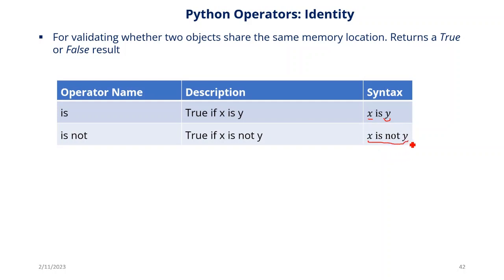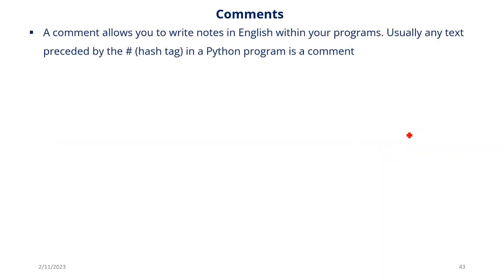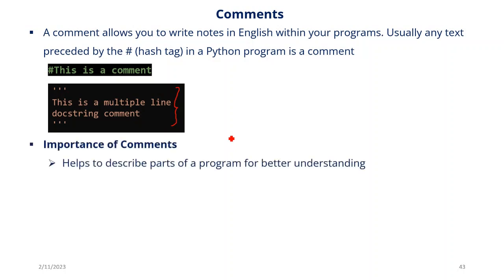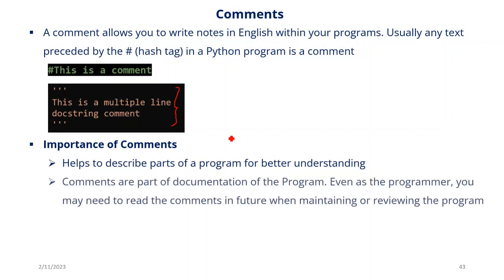Comments — before we go. We cannot overemphasize the importance of comments in programming. The basic comment in Python is any statement preceded by the hashtag (#). You can also create multi-line comments, similar to multi-line strings — the difference is you do not equate the triple-quoted block to any variable before the first triple quotes; otherwise it would be a multi-line string. Comments help to describe parts of a program for better understanding, they are part of the documentation, and they help multiple programmers collaborate on a project.